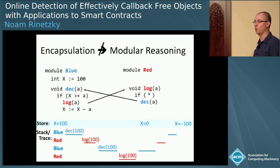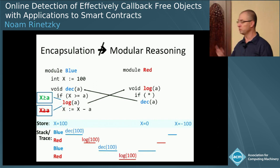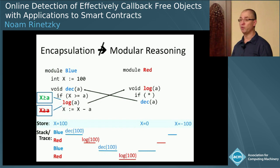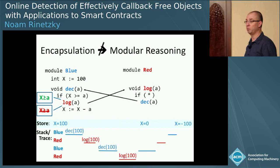So we broke the invariant. Why? Because our assumption that after invoking log, X will still be greater than or equal to A turned out to be false — the callback changed the state in between. This is what broke our reasoning.